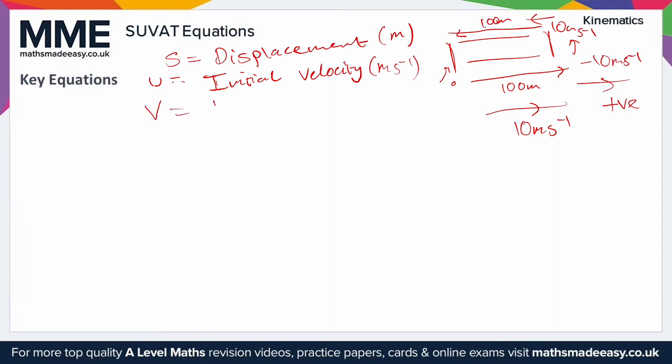Next we have V, which is very similar to initial velocity. This is final velocity. Initial is the speed that it's traveling at at the start of our time period. V is the final velocity, so whatever the velocity is at the end of our time period. Again, meters per second.